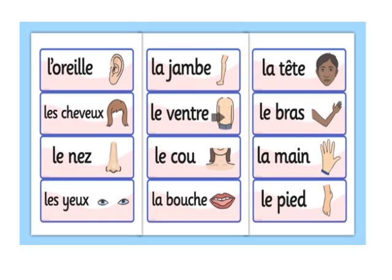Now students, I will teach you something new today — that is the body parts in French. First picture you can see: l'oreille — ear. Next is la jambe — jambe means leg. La tête — head. La chevelure — hair.